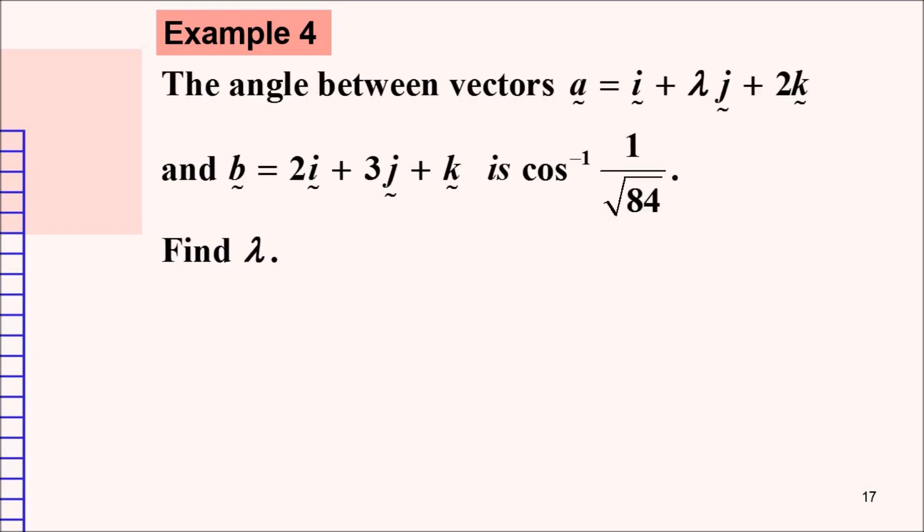If we are given that the angle between two vectors — vector a: i plus λj plus 2k, and vector b: 2i plus 3j plus k — is given by inverse cos of 1 over √354, we need to find the value of λ.